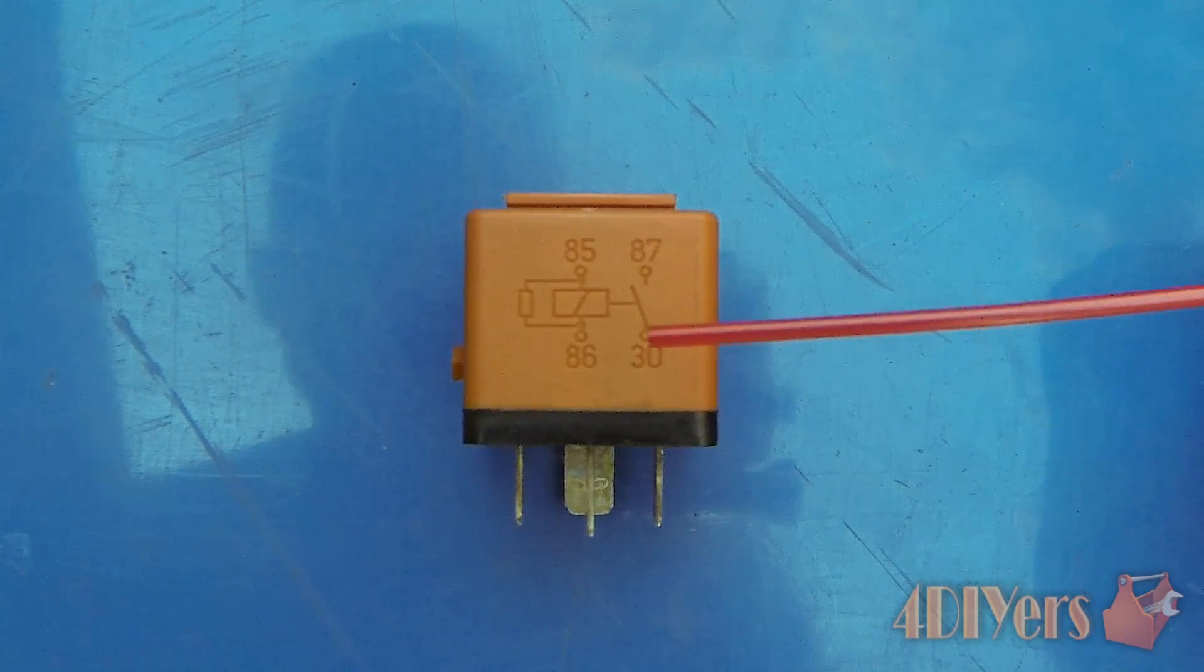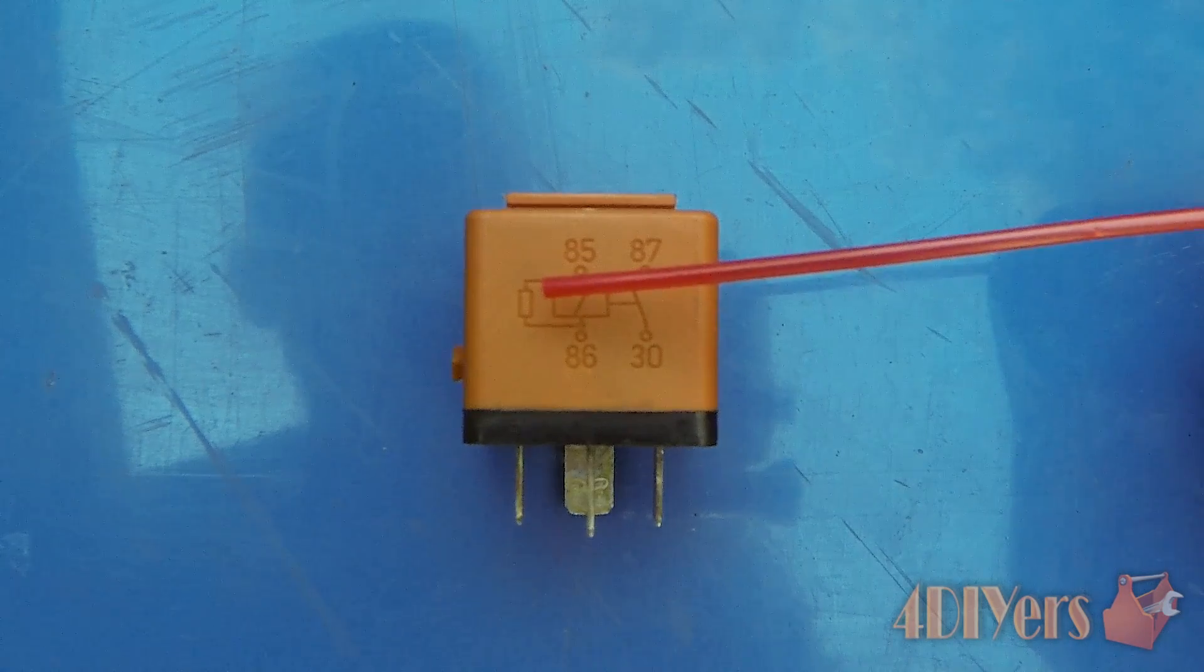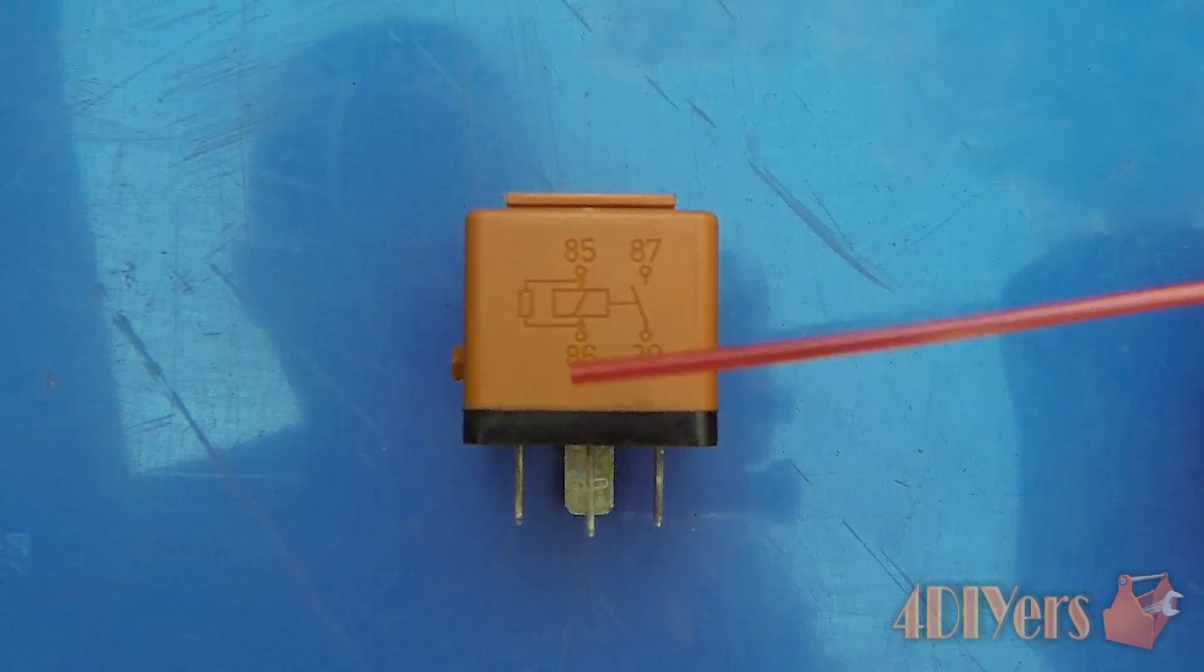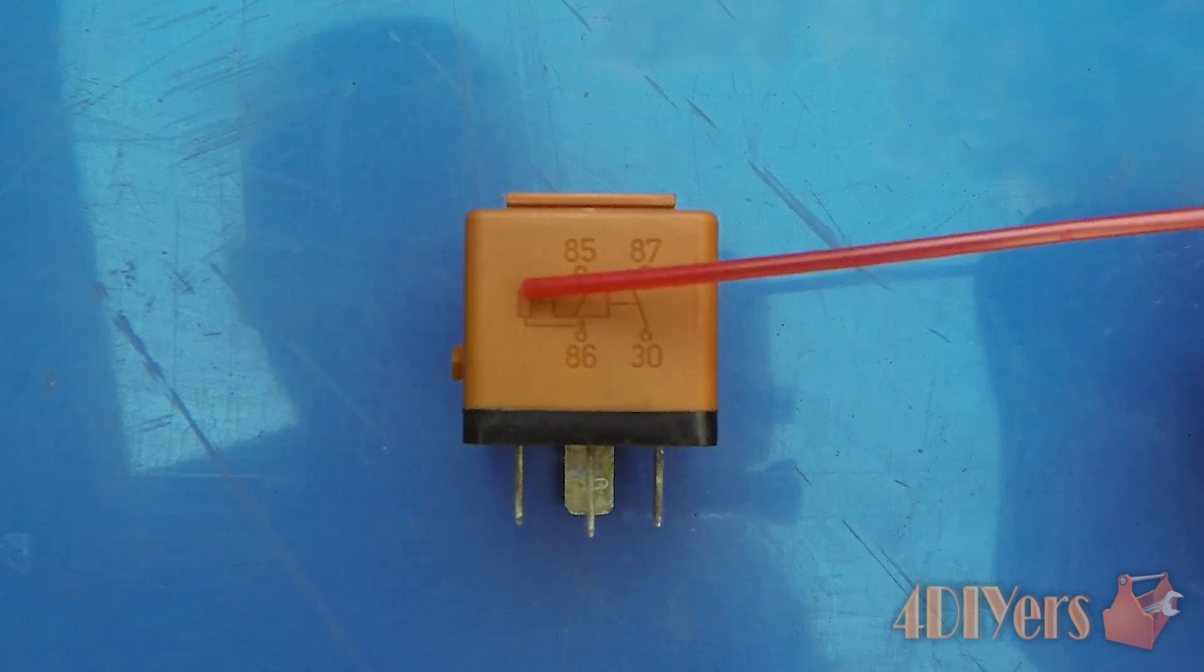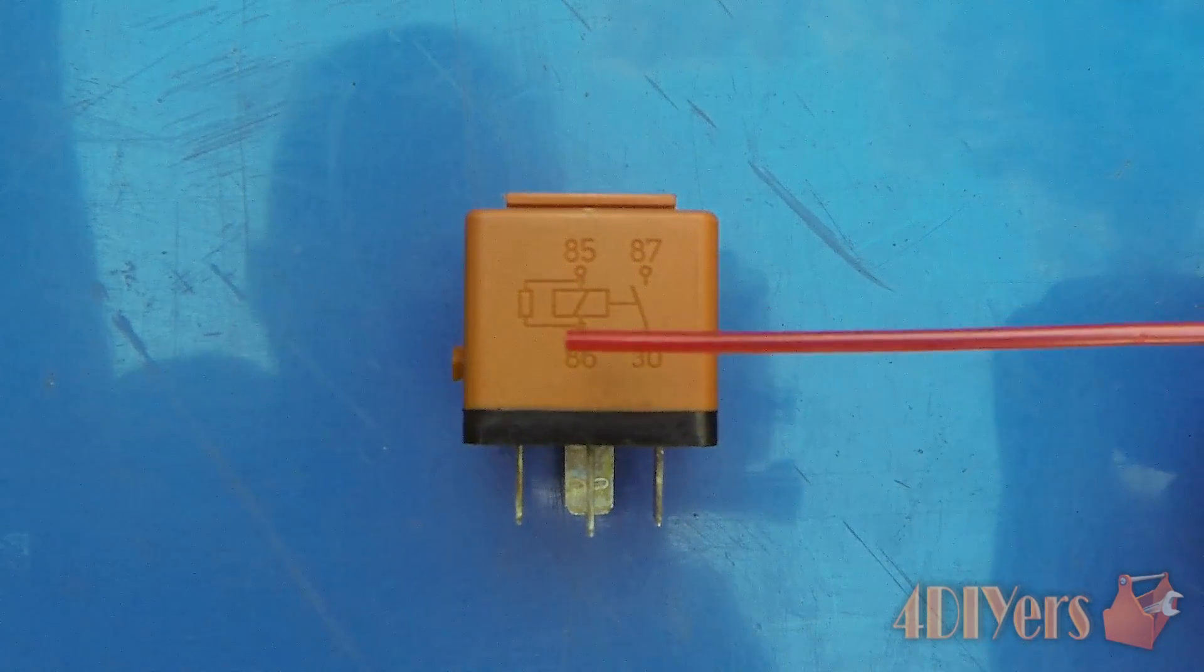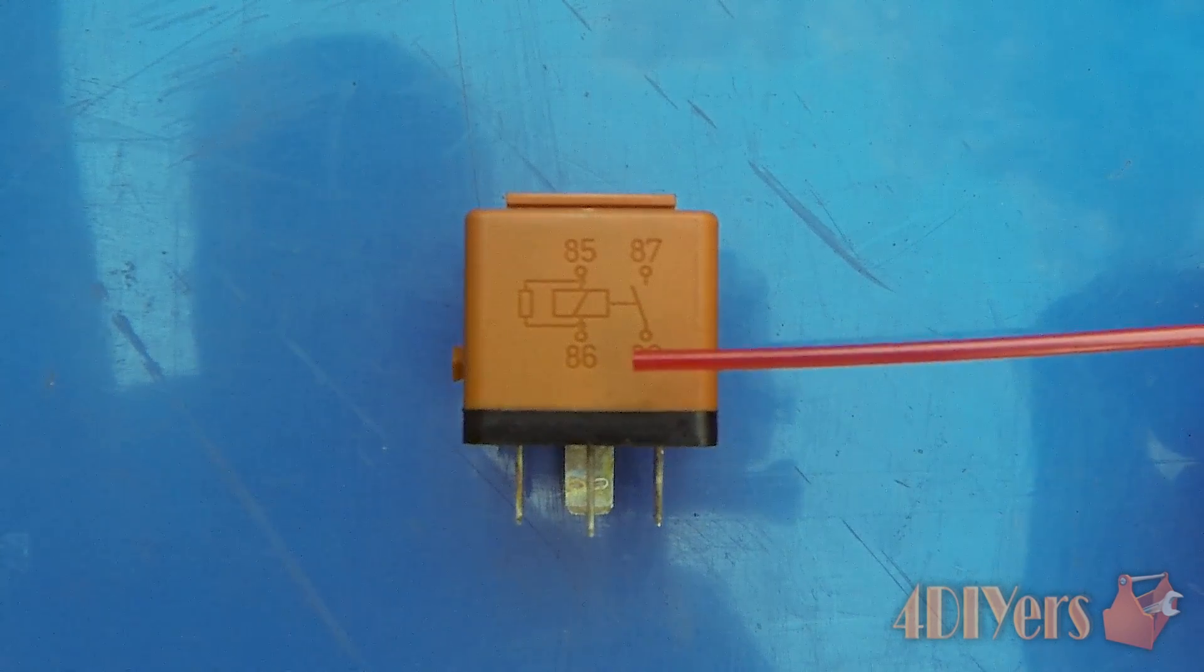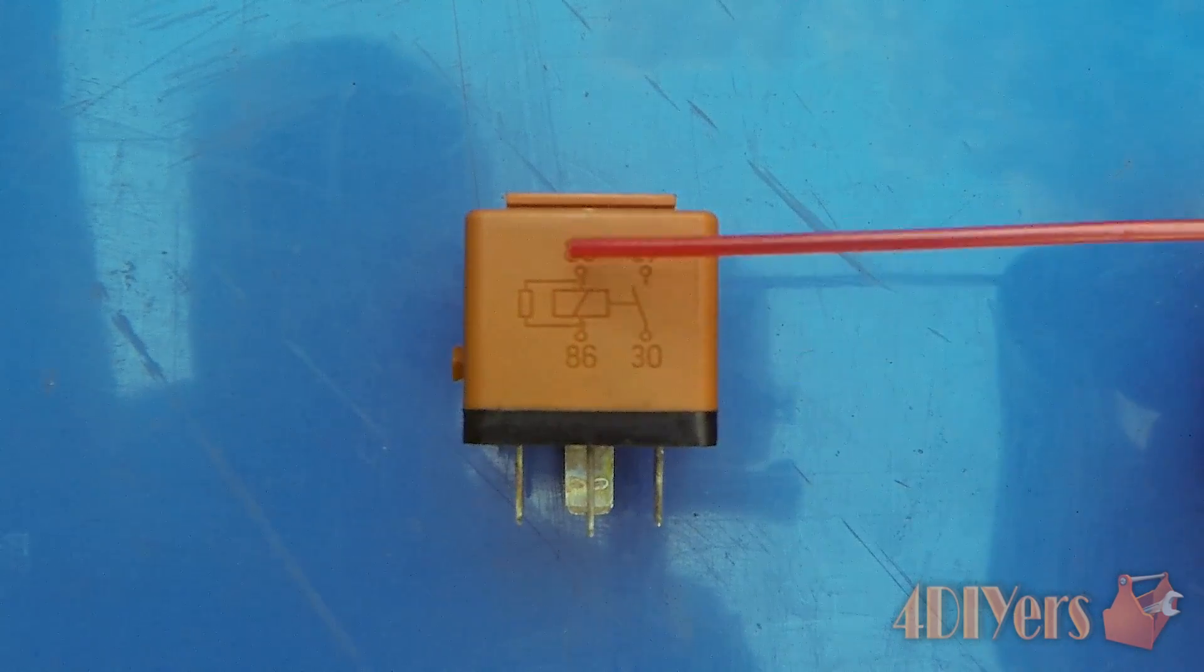Some relays include extra electronics inside which remove voltage spikes that could be hazardous to the system. This one includes one of those, which is a resistor. This is a four pin relay with pin numbers 30, 87, 86, and 85.